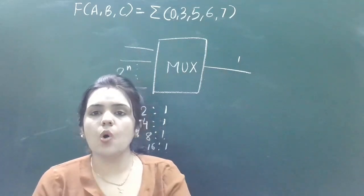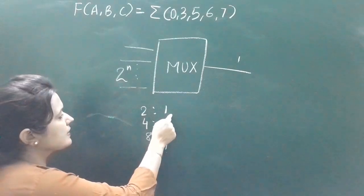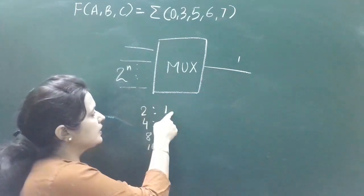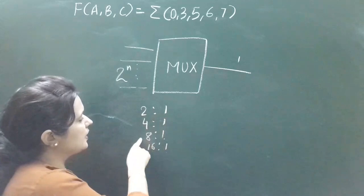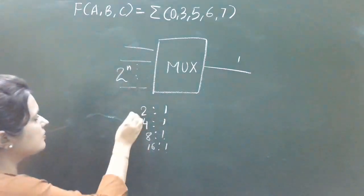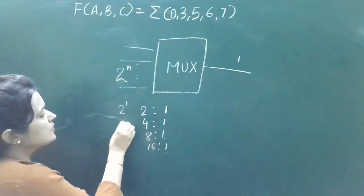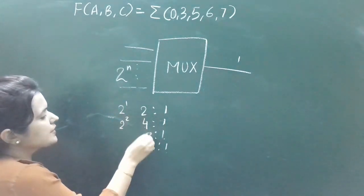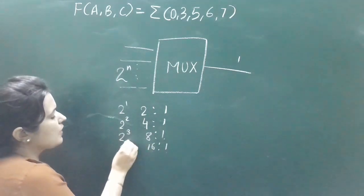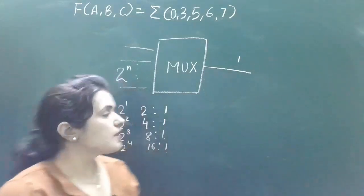The inputs of a multiplexer are always in powers of 2. So we can have a 2-to-1 multiplexer, 4-to-1 multiplexer, 8-to-1 multiplexer, 16-to-1 multiplexer, and so on — because 2 can be written as 2 to the power 1, 4 as 2 to the power 2, 8 as 2 to the power 3, and 16 as 2 to the power 4.